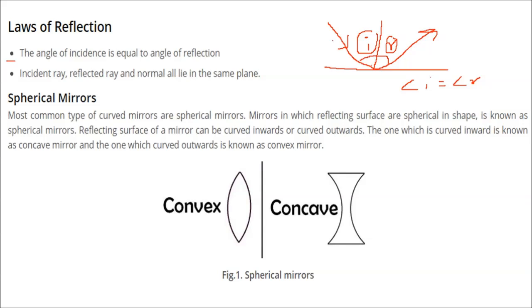The second law of reflection states that the incident ray, the reflected ray, and the normal to the plane all lie on the same plane. So these are the two laws of reflection.